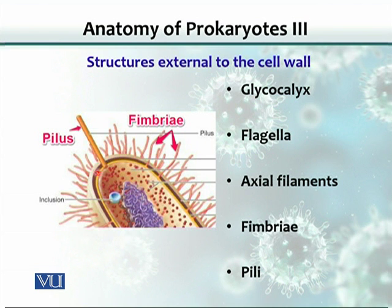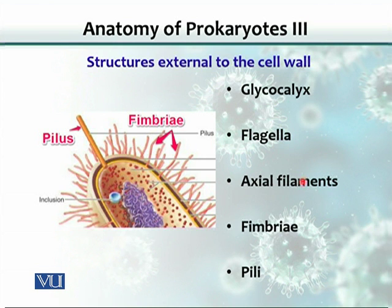Other external structures include the flagellum, which is a long thread. Flagella comes in two forms — most bacteria have flagella, but spirochetes' flagella is called the axial filament. The purpose of the flagellum, as mentioned, is to make movement possible.